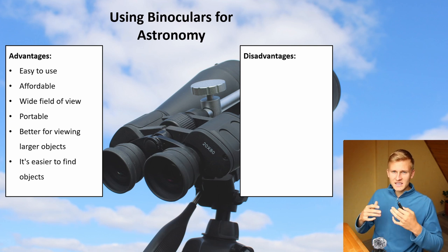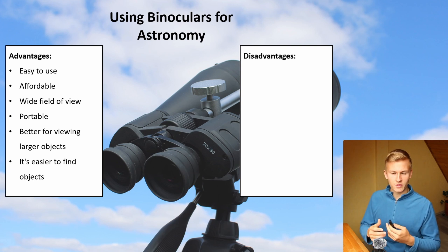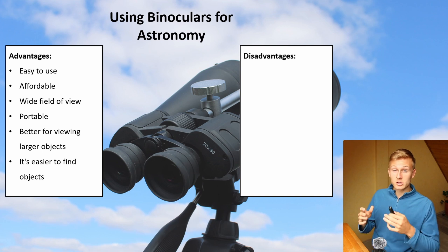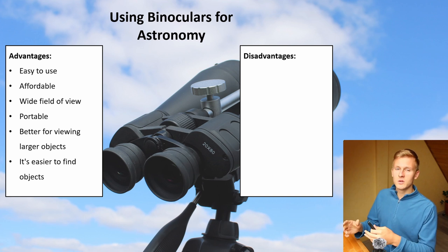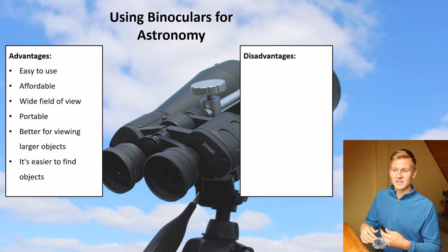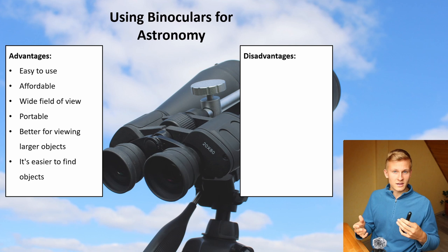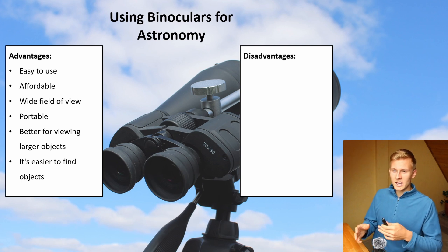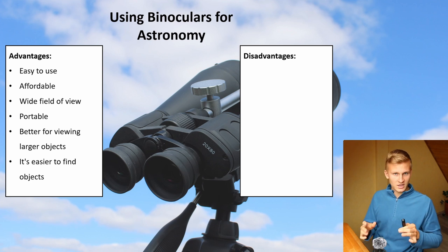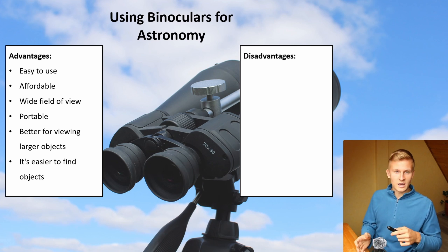Another advantage is that it's easier to find objects with binoculars. As mentioned, you don't have that much magnification, so you have a wide field of view which helps you find those objects more easily. In general, that's very helpful because in the beginning the night sky is something new to you. A wide field of view is helpful to find objects easier and faster compared to a telescope, where it might be very difficult to find small objects as a beginner.